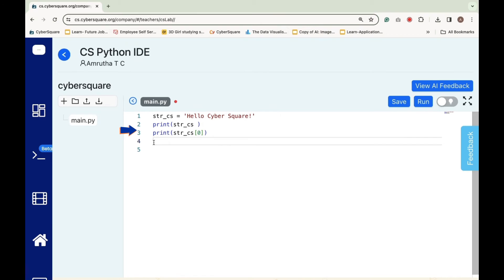istr_cs[0] will print the character at the 0th position of the string istr_cs.